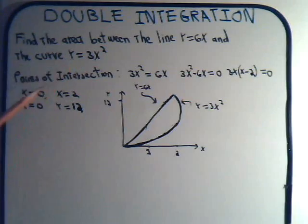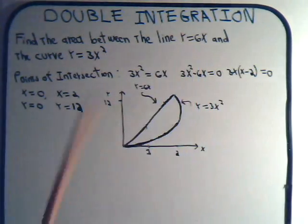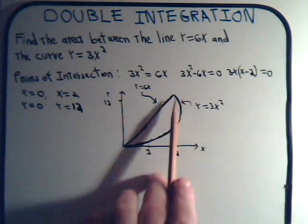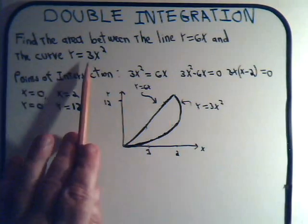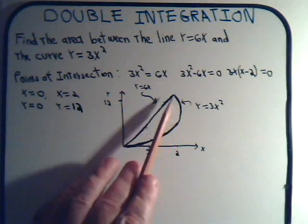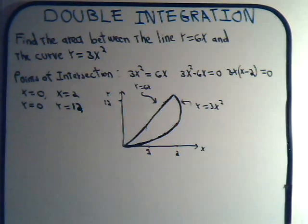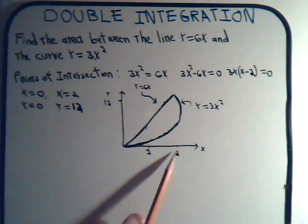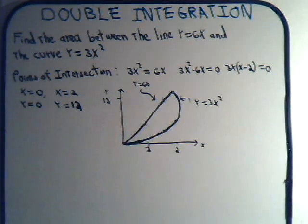When x is 0, then y is going to be 0. And when x is 2, y will be 12. Y equals 6x, that's just this straight line here. And y equals 3x squared, that's this parabola curve. The intersecting points are 0, 0, and 2, 12.